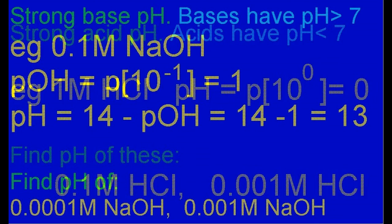For the drain cleaner sodium hydroxide, we find the pOH first. Then we subtract it from 14 to find the pH. Alkalies have pHs greater than 7. Be very careful with caustic soda as it can blind you. Calculate the pH of the other two solutions. The answers are 10 and 11.